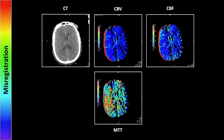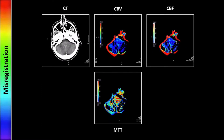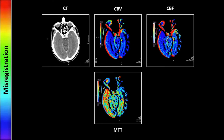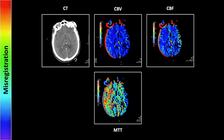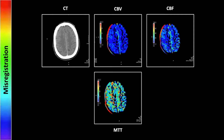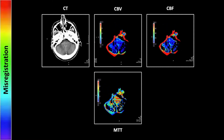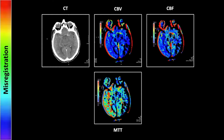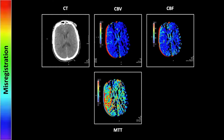Next we have an example of a misregistration artifact, which is more specific to CT perfusion. You can see that the color maps have been superimposed on the anatomic images in such a way that they are offset, and obviously this has to be given a more nuanced interpretation as well. Similar to the motion artifact, you can see that these involve every image in every set. So that is a case of misregistration artifact.